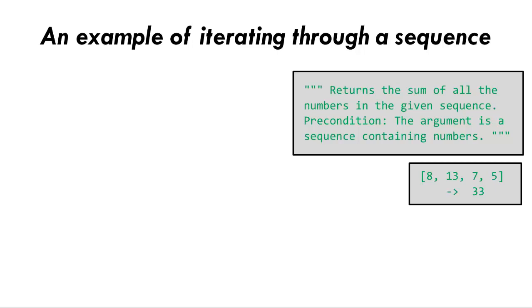For example, if the sequence is the one shown here, then the function would add 8 plus 13, getting 21, then add 7 in to get 28, then add in 5 to get 33, and return that value 33.